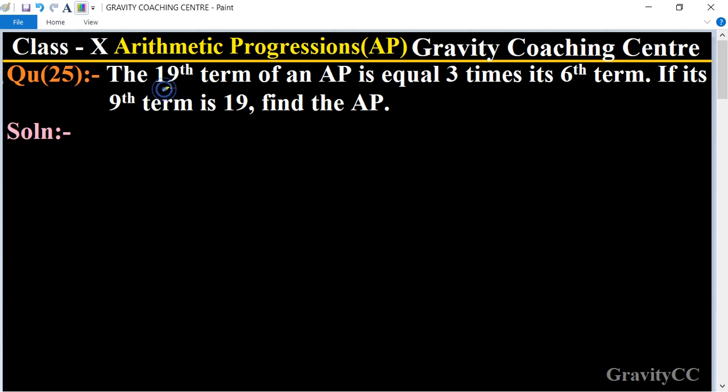In this question, given that the 19th term of an AP is equal to three times its 6th term, means a₁₉ equals three times a₆. And the 9th term is 19, means a₉ equals 19.